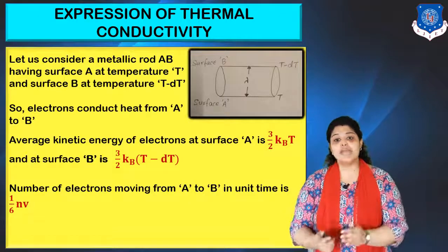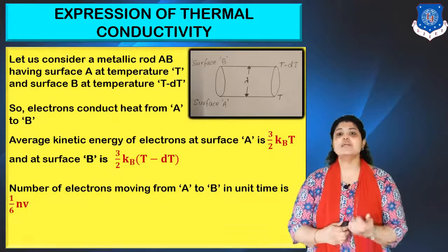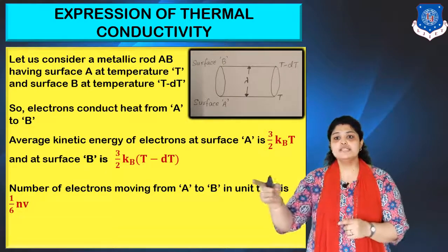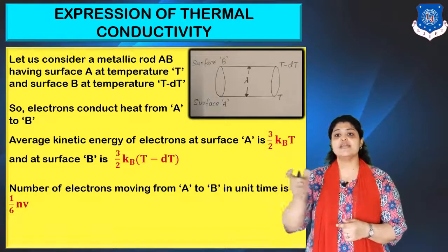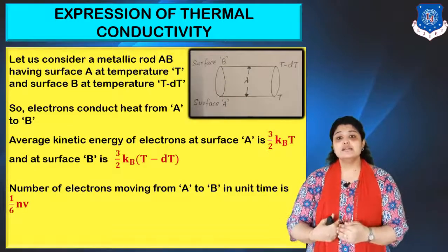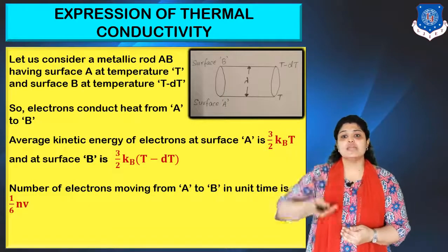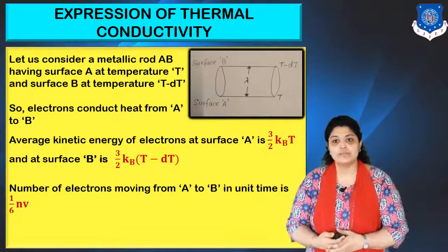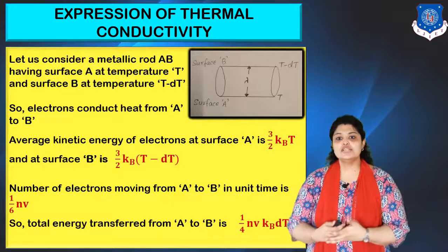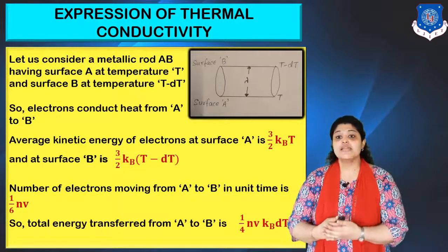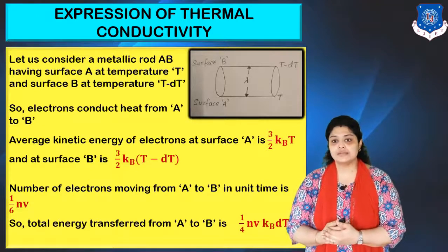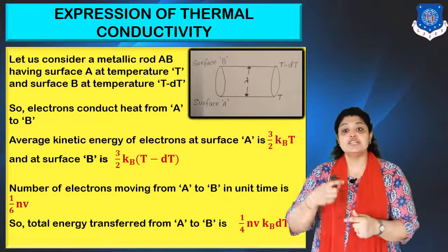The number of electrons moving from A to B per unit time is (1/6)Nv. In a conductor with a 3-dimensional structure, electrons can move in six directions: ±X, ±Y, ±Z. In our case, motion is from A to B, which is 1/6 of the total probability. So the number of electrons is (1/6)Nv. The total energy transferred from surface A to surface B equals (3/2)k·dT × (1/6)Nv = (1/4)NvkB·dT, where dT is the temperature difference between A and B.